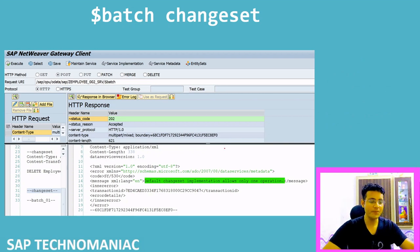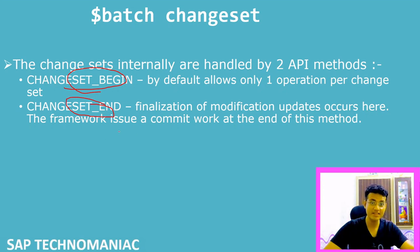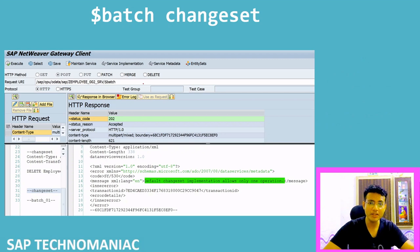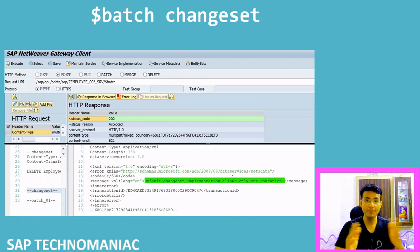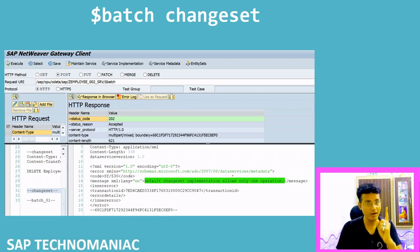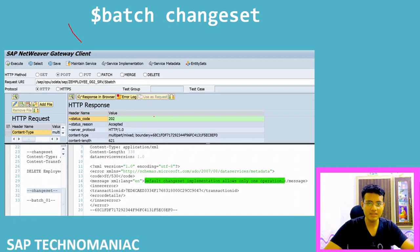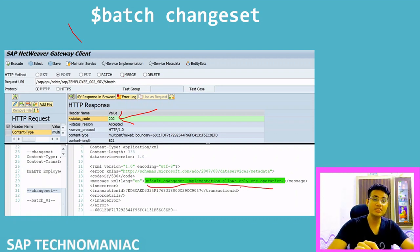If you did not implement the Change Set Begin and Change Set End methods but are trying to execute a $batch with multiple modification operations — delete, create, multiple operations on an entity — you will get this message: 'Default Change Set Implementation allows only one operation.' Your service call will be accepted with HTTP 202, but within the response you will get this error saying multiple operations are not allowed by the default implementation.